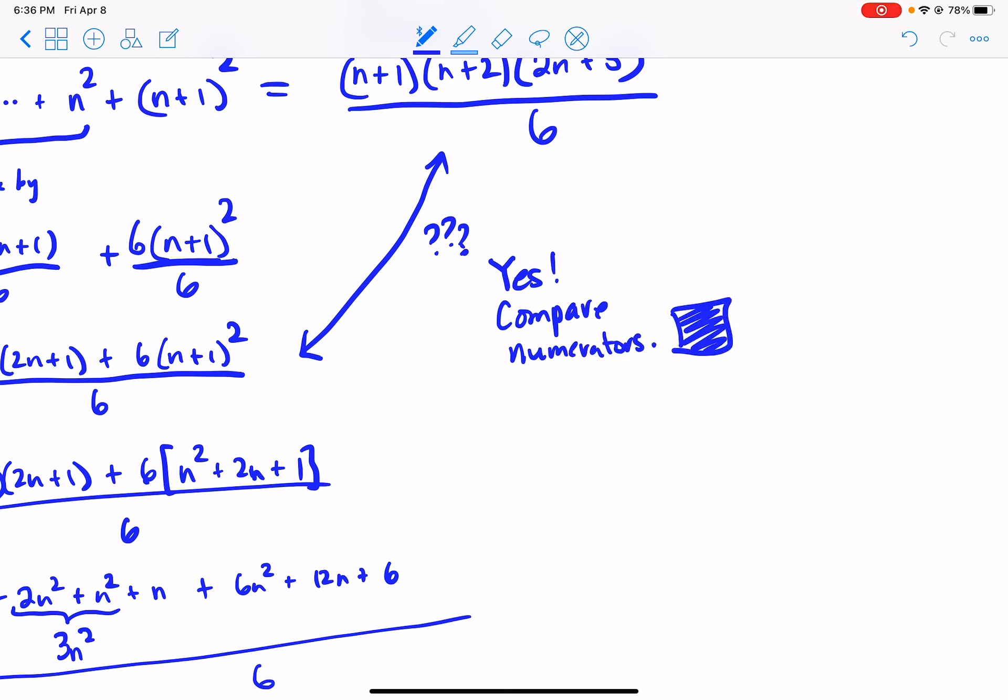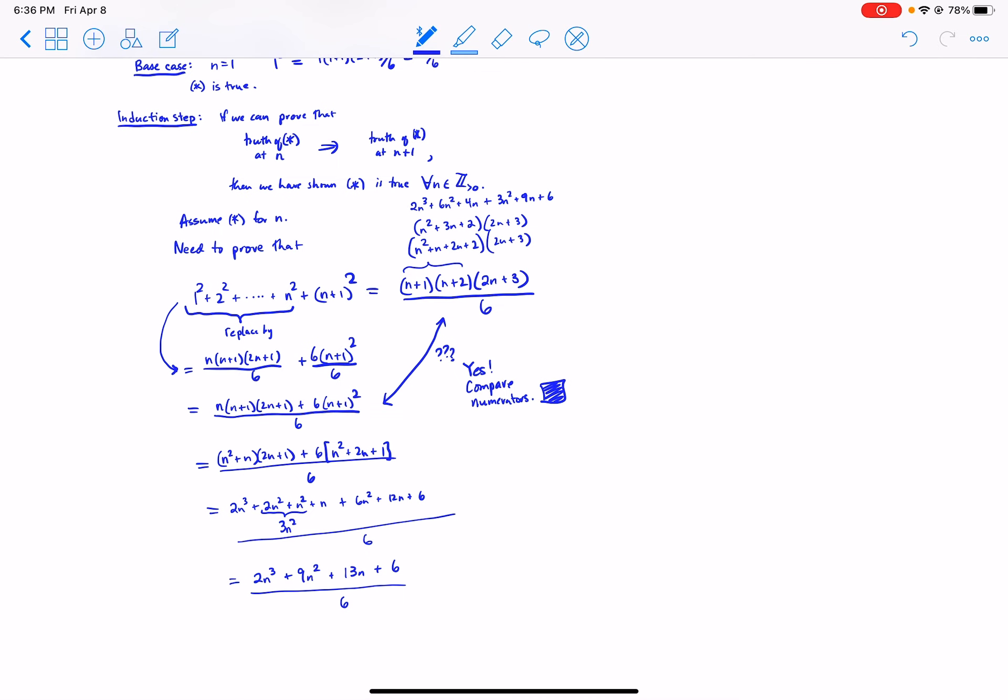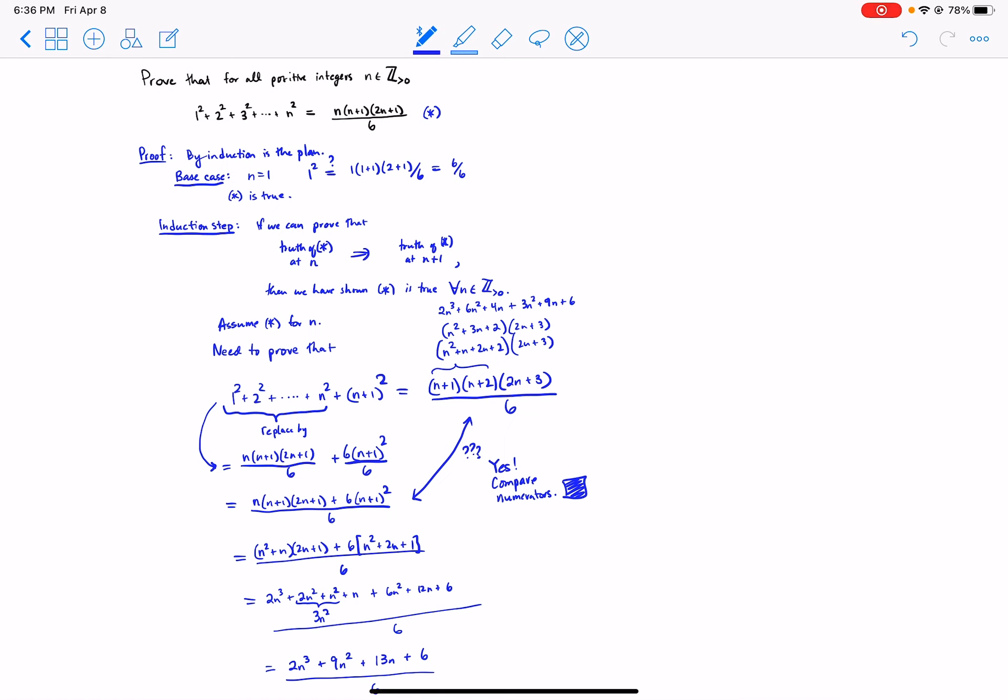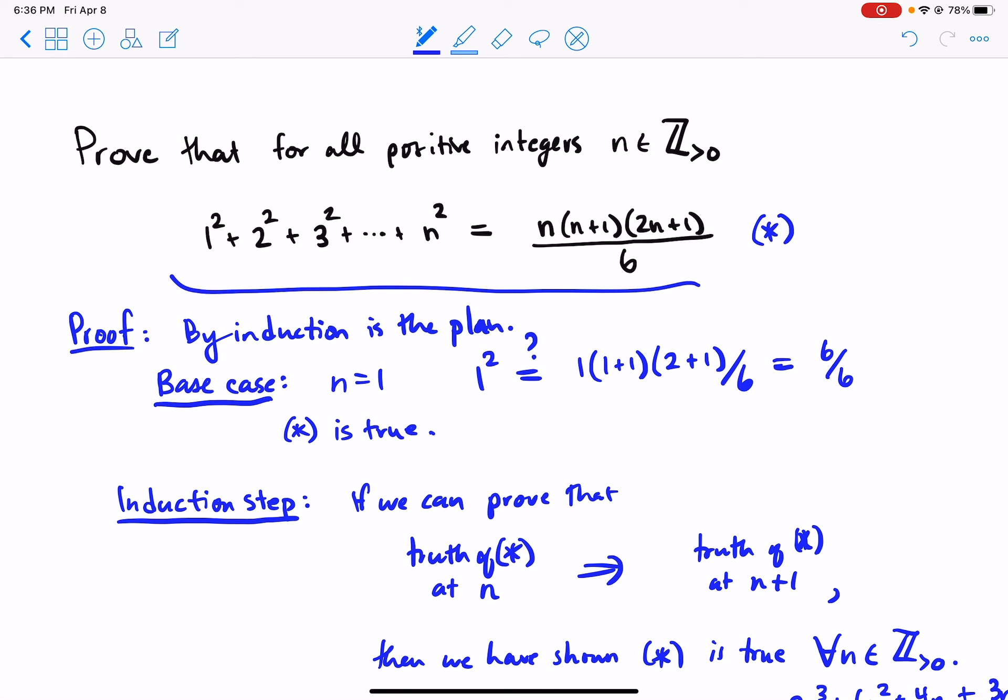End of proof. Okay, that's a fun one. We've proved infinitely many equalities. We have an equation for every choice of positive integer. And we actually proved infinitely many equations. So that's kind of cool. That's why induction is nice. All right. Thank you.